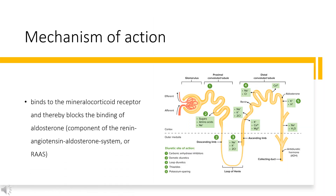Mechanism of Action. Eplerinone binds to the mineralocorticoid receptor and thereby blocks the binding of aldosterone, a component of the renin-angiotensin-aldosterone system (RAAS). Aldosterone synthesis, which occurs primarily in the adrenal gland, is modulated by multiple factors, including angiotensin-2 and non-RAAS mediators such as adrenocorticotropic hormone (ACTH) and potassium. Aldosterone binds to mineralocorticoid receptors in both epithelial (e.g., kidney) and non-epithelial (e.g., heart, blood vessels, and brain) tissues, and increases blood pressure through induction of sodium reabsorption, and possibly other mechanisms.